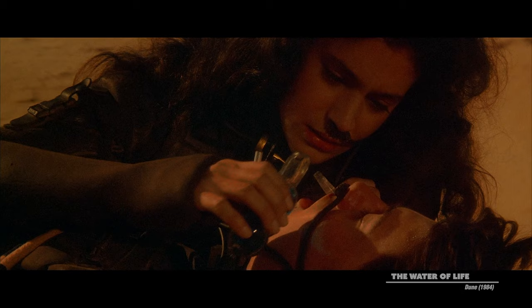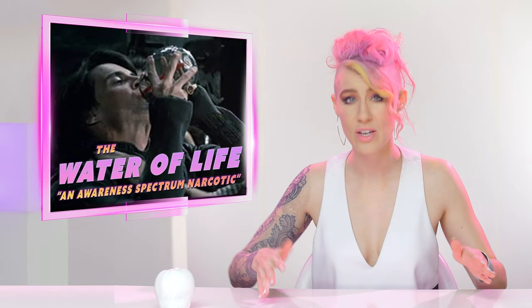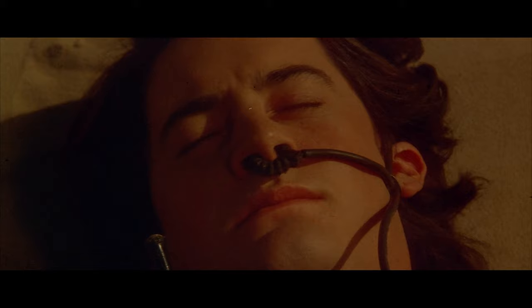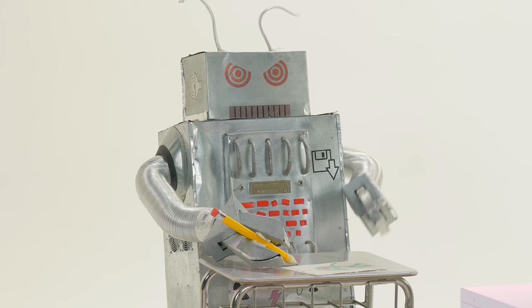The Bene Gesserit order, on the other hand, is a sisterhood that uses the spice to bring out a variety of abilities in its members. Most notably, administering a highly toxic spice concentrate known as the Water of Life to advanced adepts, who must consciously convert the poison into a benign substance within their own bodies — or die trying. This immensely painful process is known as the Spice Agony, and it causes the sister's genetic memories to emerge, allowing her to gain the memories of all of her genetic ancestors on the female side.